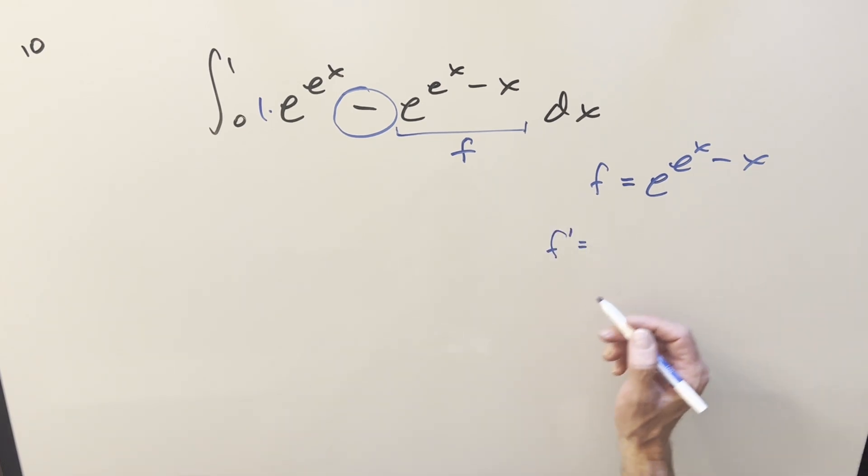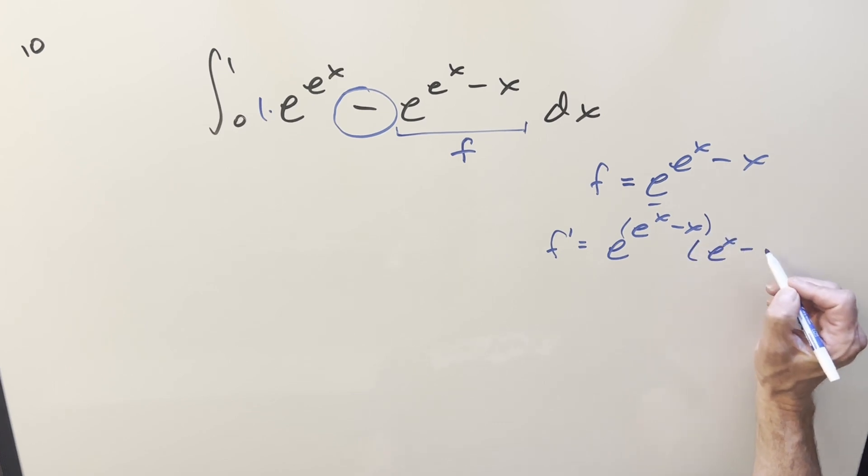So we take a derivative on it. What's going to happen first with e as the base, we get back this. Then with chain rule, we need to differentiate this. So what we get back is e to the x minus one. You could put a dx, but let's leave it.